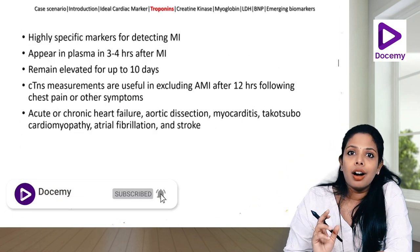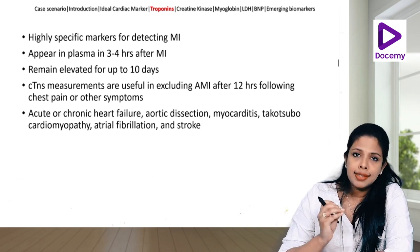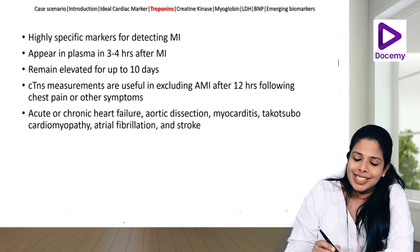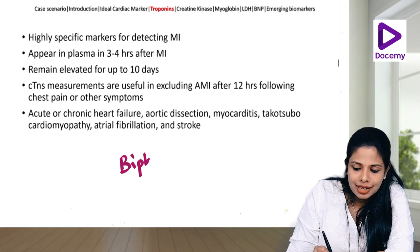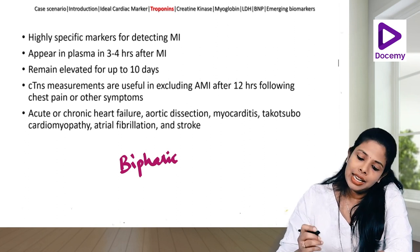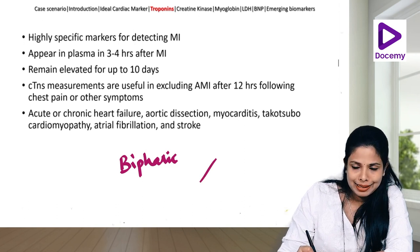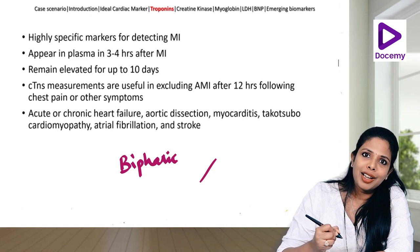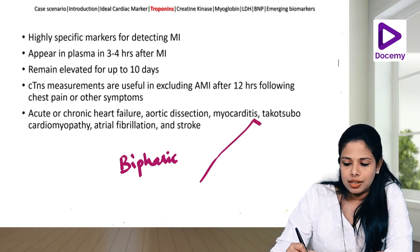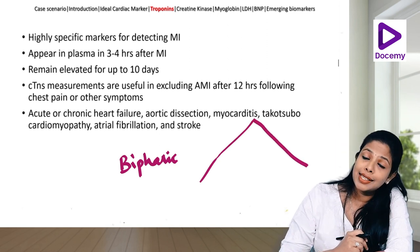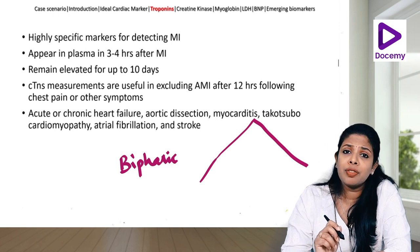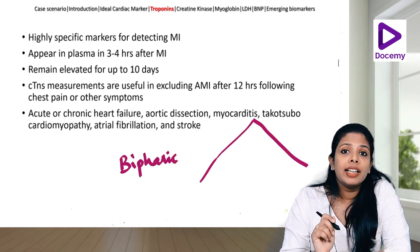Whenever an acute MI occurs, there is release of troponins from the cardiac tissue — a biphasic increase. First, the cytosolic (free) troponins are released in a small, minimal amount. Later, there is a gradual and sustained release of the myocardial (protein-bound) troponins. Please note these are highly specific and highly sensitive markers of acute myocardial infarction.